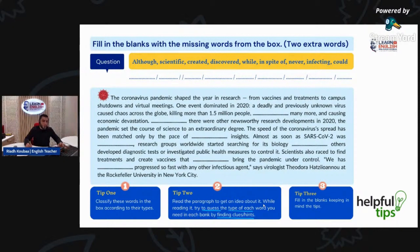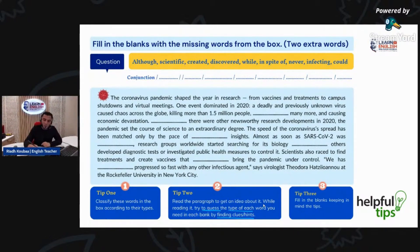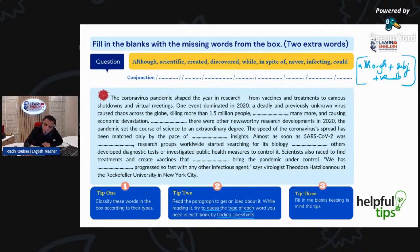The first word: 'although.' What is the type of this word? It's a conjunction — a word that we use to link between two sentences. So I have to keep in mind that if I am going to use 'although,' the structure is: although + subject + verb. If I am going to use it, I will have to find a subject and a verb. That's the structure of this conjunction.